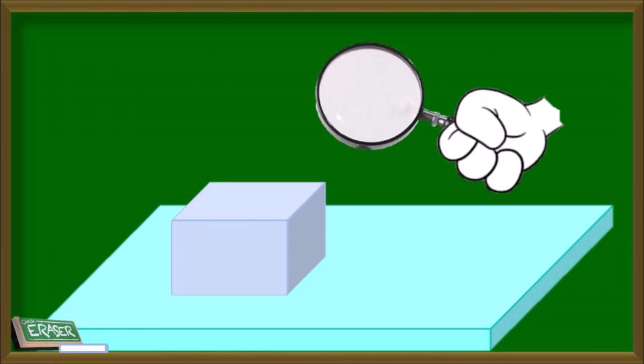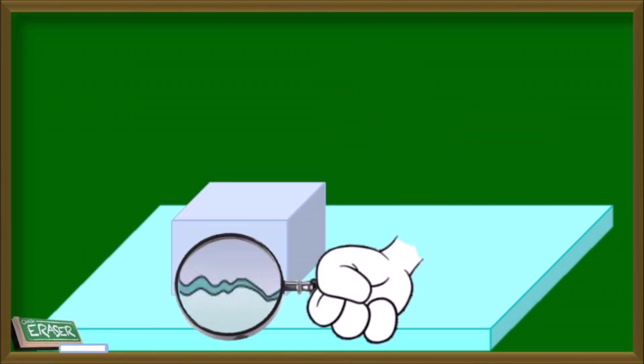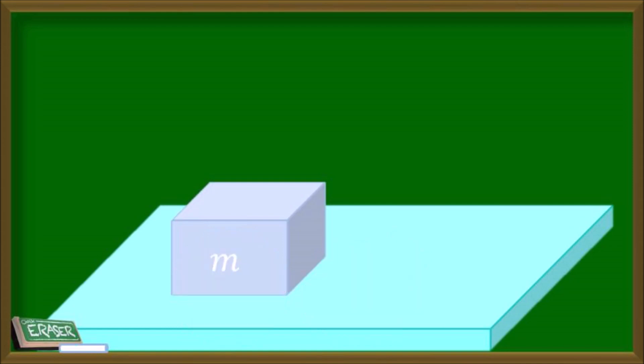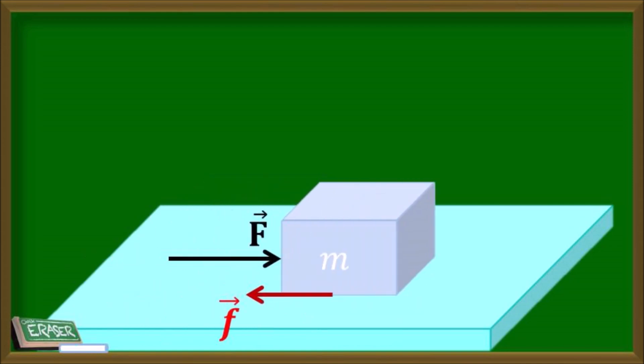When two surfaces come into contact, these irregularities interlock with each other, creating resistance to motion.